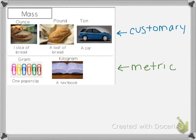The last one we're going to talk about is mass. When we're measuring mass, we're looking at how heavy an object is. Our customary measurements are an ounce, which is about one slice of bread; a pound, which is about a loaf of bread; and a ton, which is really heavy — it would be about a car. For the metric, we have a gram, which is one paper clip, so that's really light.